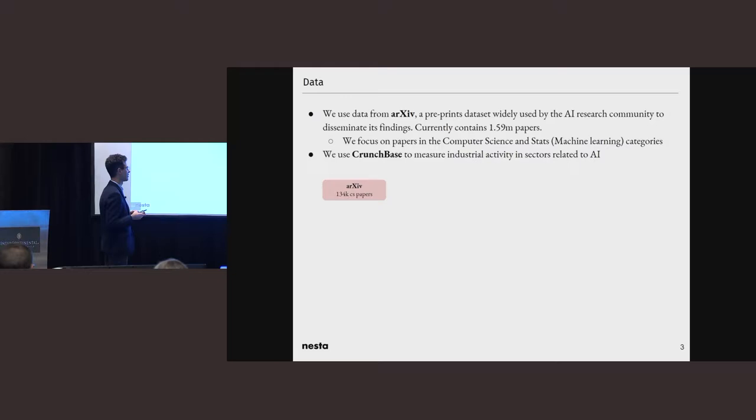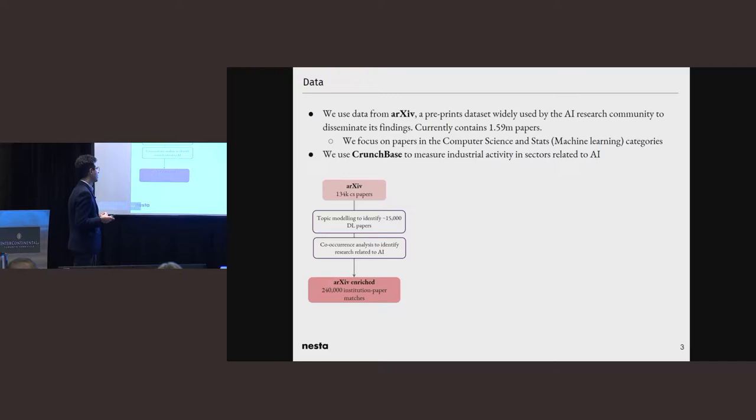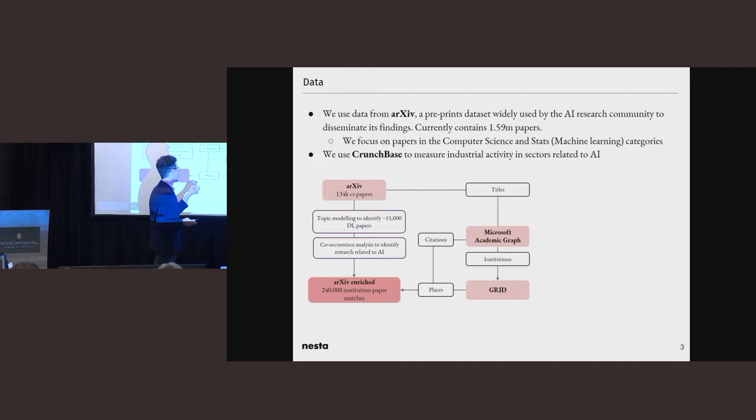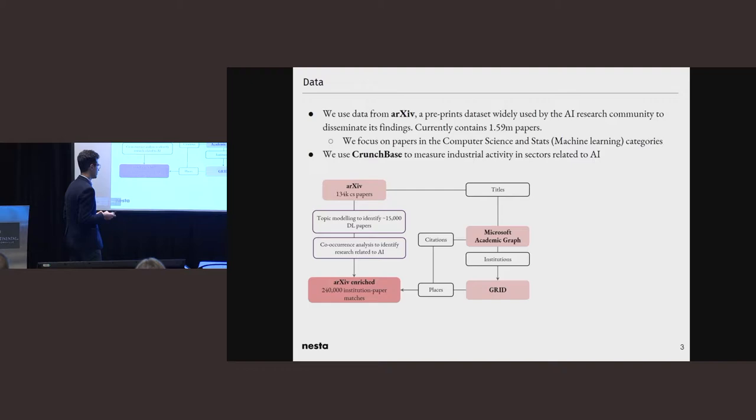And then to be able to look at industrial activity, we're going to be using Crunchbase, which is a company directory with around 720,000 companies within the technology sector broadly defined. Let me take you through a very quick tour of our data pipeline. Starting with the computer science papers in ArXiv, we're using topic modeling to identify those papers which are related to deep learning. We're going to be looking at the co-currents between deep learning and other computer science fields to identify which of those fields are related to deep learning research. Then we're going to take the titles of ArXiv, match that with the Microsoft academic graph to get the institutions of the researchers working on those papers, and then match them with a global research identifier grid to get the locations of those institutions.